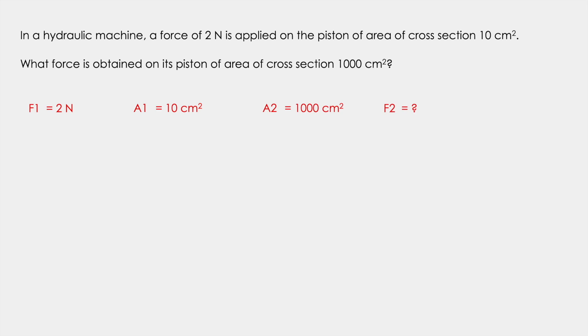So we know the formula F2 equals F1 upon A1 multiplied by A2. Now here both the areas have been given in centimeter square. And since we are going to use these areas in the numerator and the denominator respectively, we are not going to convert any of these areas because they are simply going to cancel out. So when we replace the values in this formula we get F2 as 200 Newton.